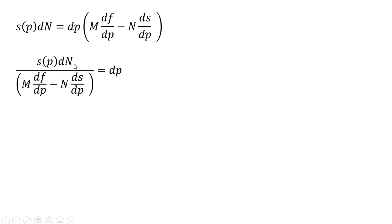And then, finally, let's divide everything through by dN, the change in the number of firms. And we got our derivative that we're looking for: dp/dN = s(p) / (M·df/dp - N·ds/dp), the effect on price from an increase in the number of firms.